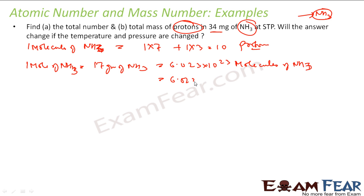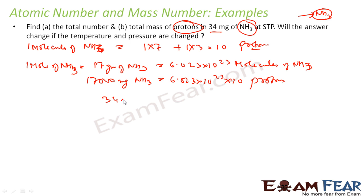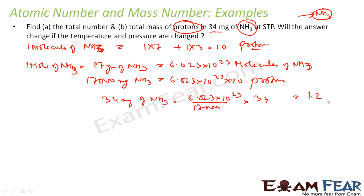Each mole of NH₃ (17 grams = 17,000 milligrams) has 6.023×10²³ × 10 protons. For 34 milligrams of NH₃, the number of protons works out to 1.2046×10²² protons.